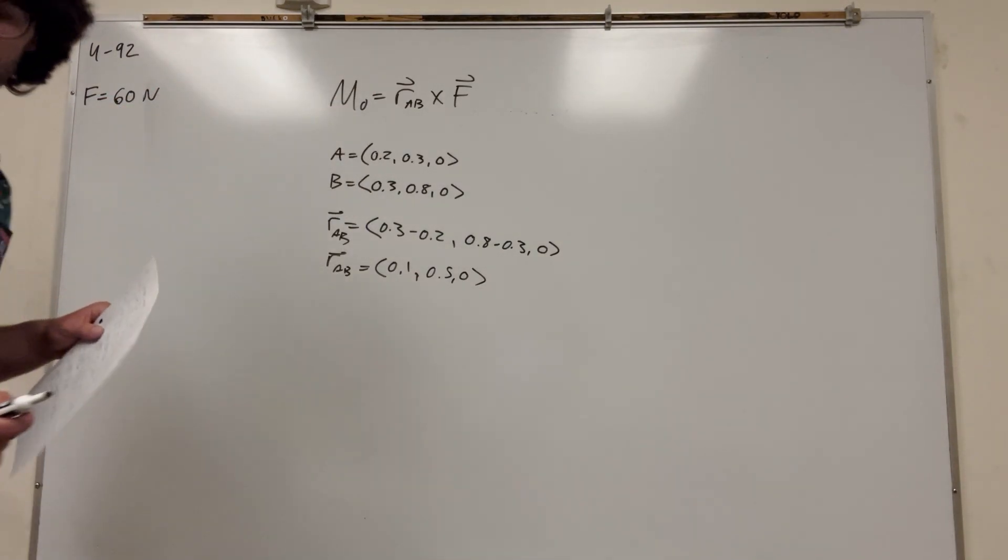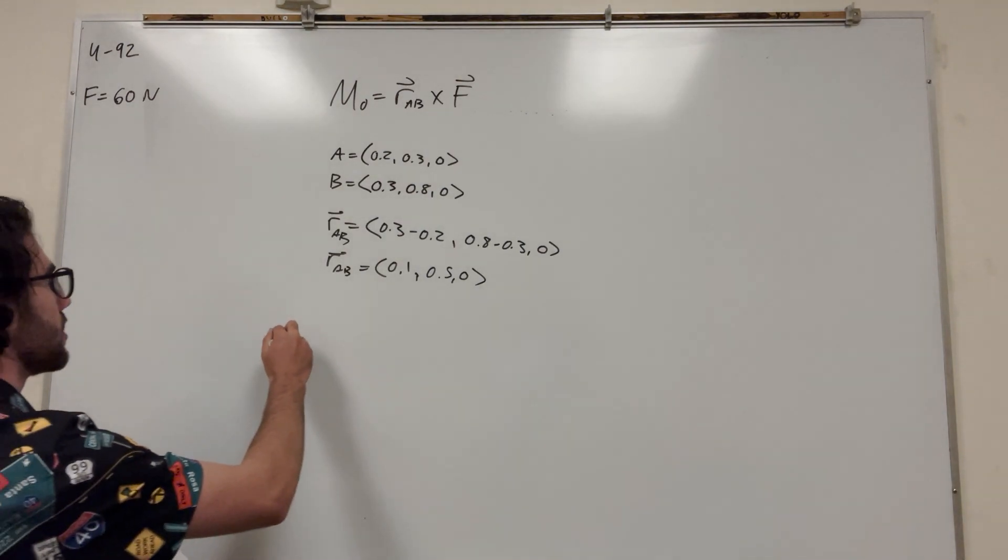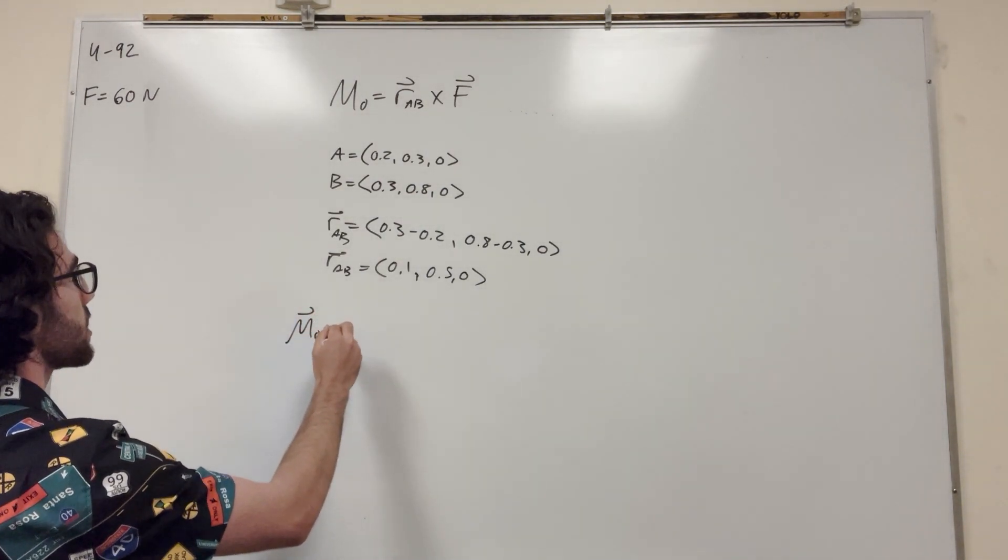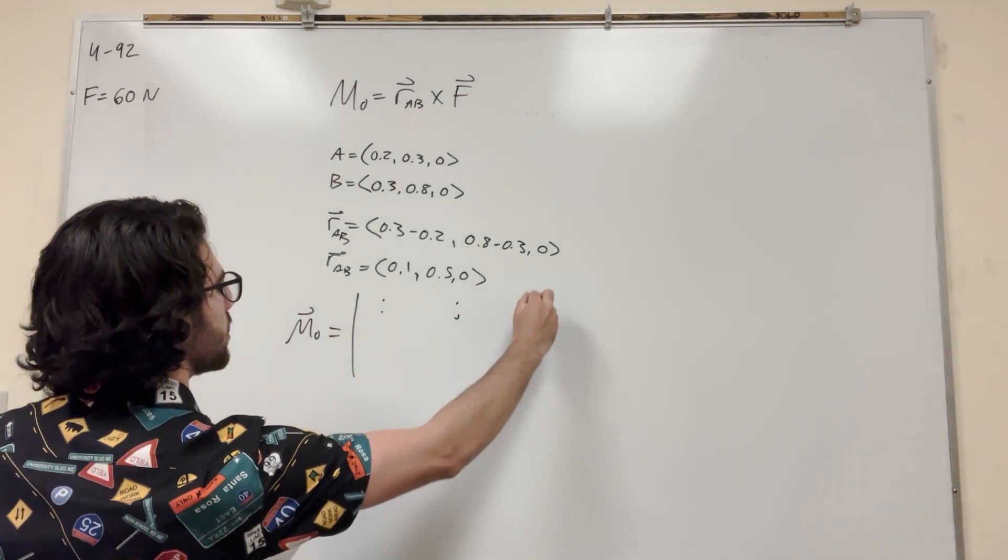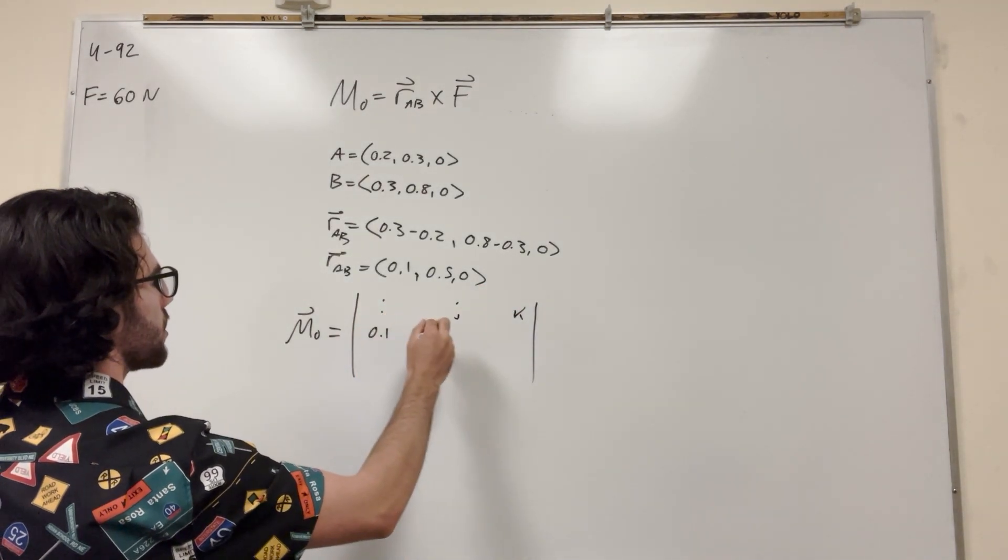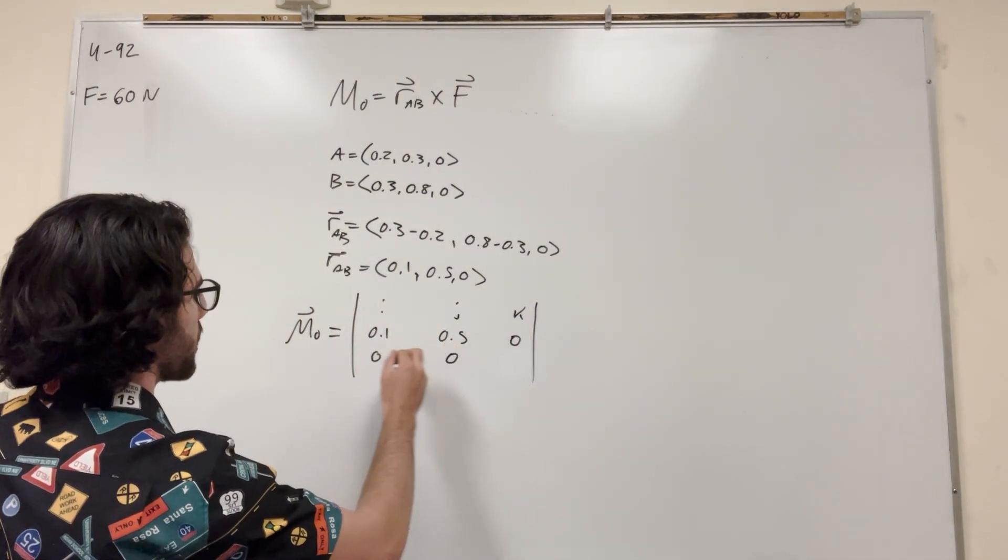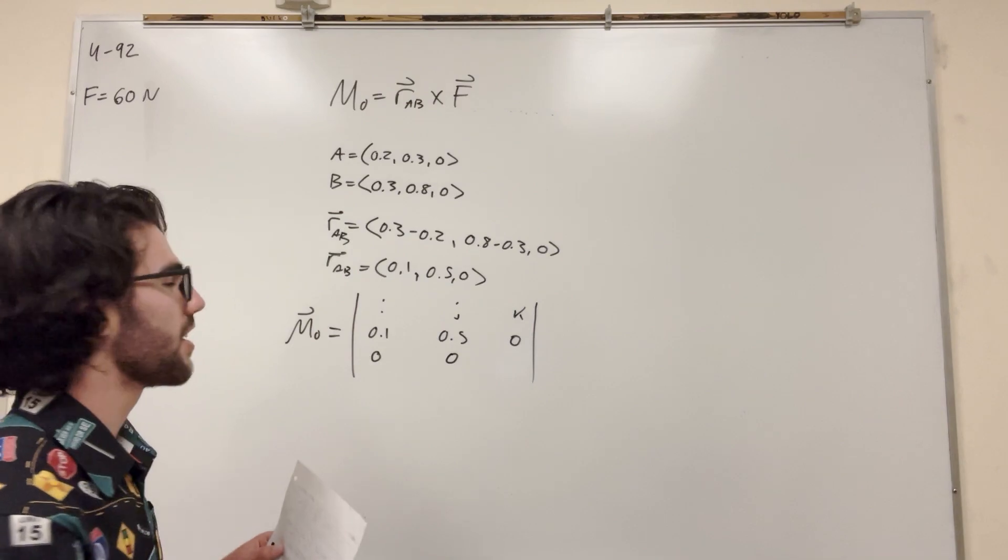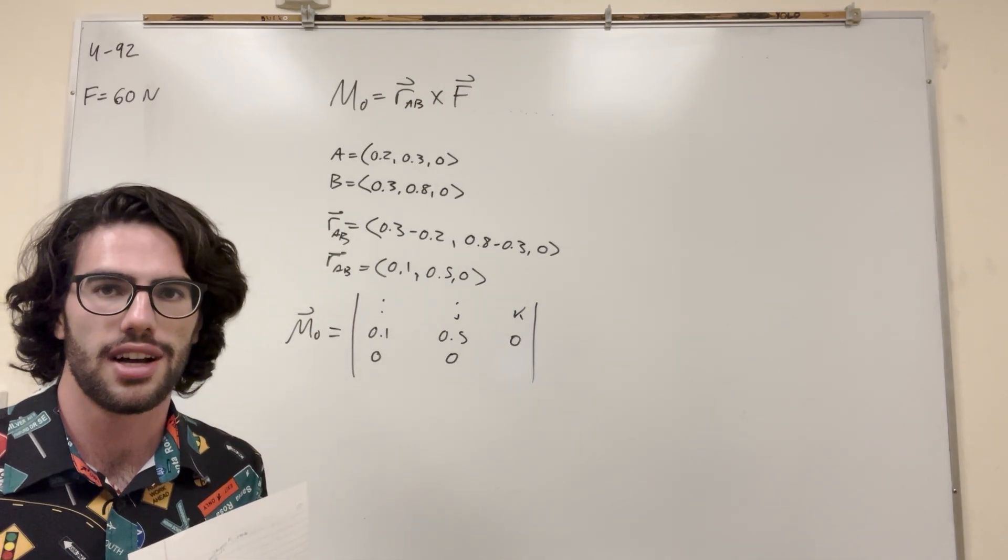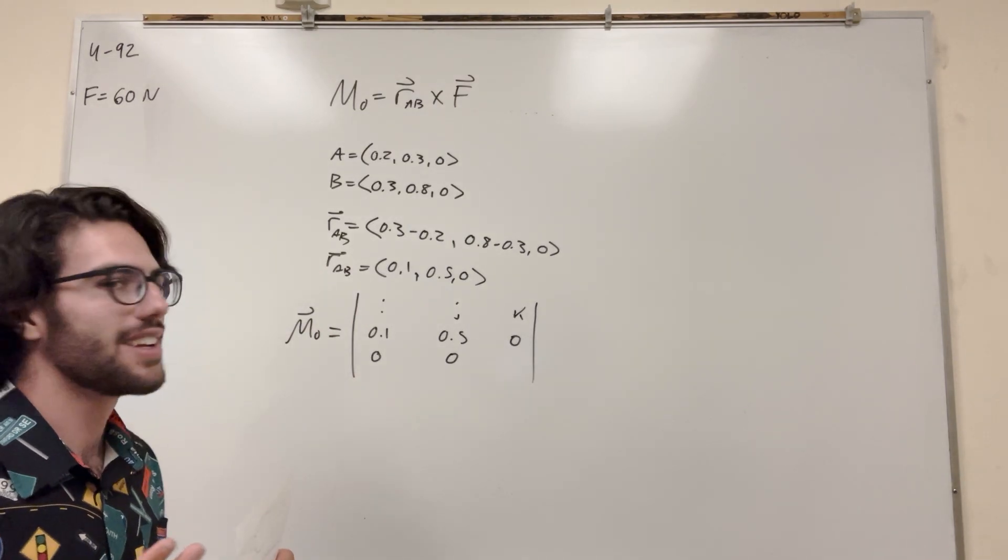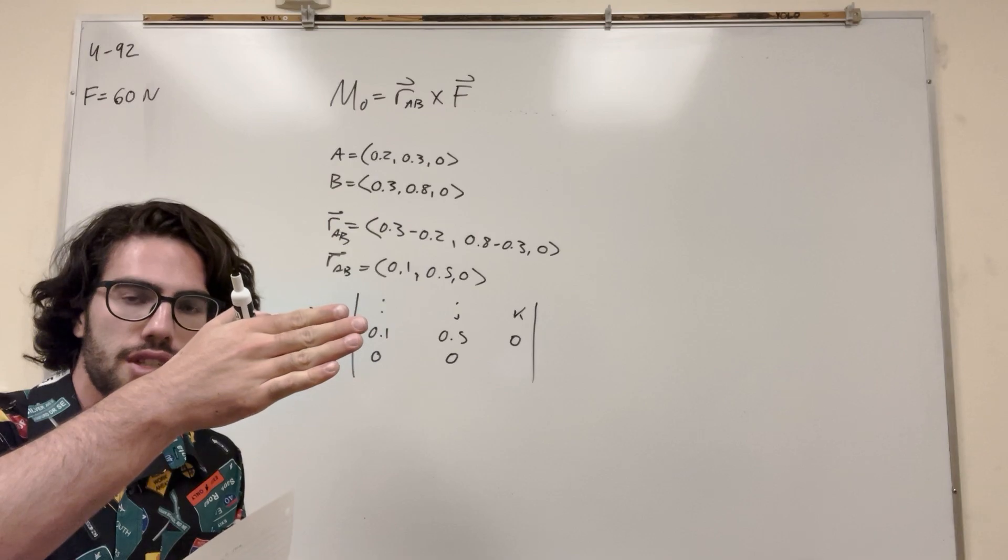Okay, now we just have to plug in this formula, and we can figure it out. So this couple moment, which is a vector, so it's going to be I, J, K, 0.1, 0.5, 0. And then, so when we're doing this, we know that there's two forces. And we're doing this couple moment. It's going to be the position vector is going to point towards a force, and then you're going to have to take the vector of that force that it points at.